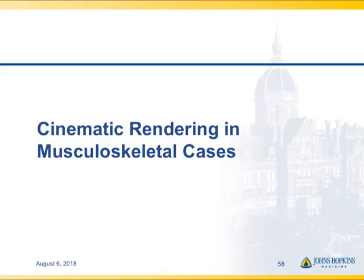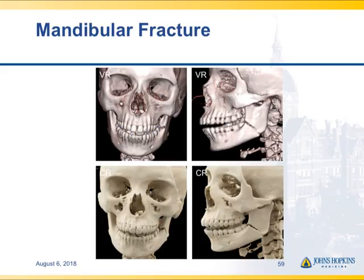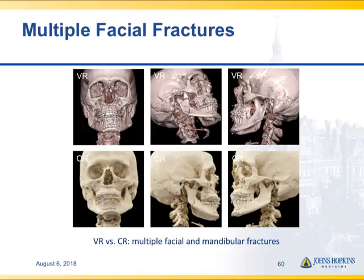Like many things, musculoskeletal imaging is ideal. I showed you an example before of the craniofacial region. Here's a very nice example of mandibular fracture — look at the various parts of the mandible, the orbit, the area of the teeth, and the detail of the cinematic rendering compared to the volume rendering, even in the same plane. Here's another patient with multiple facial fractures including the mandible and the orbit, and the detail of the fractures is far better on the cinematic than on the volume rendering, even when we use good color coding and really optimize visualization.